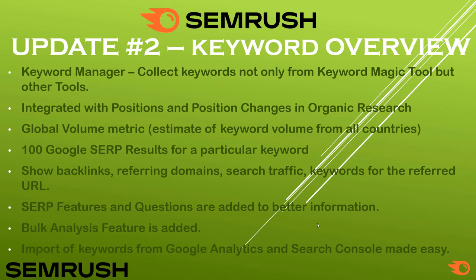Another important view in the Keyword Overview is the global volume metric. Previously you could only see country-specific data about traffic search volume, backlinks, or number of search positions. Now you can see the global search volume across all countries, not just a single geo-location like US, UK, or Canada.